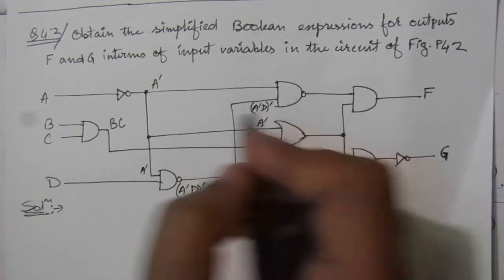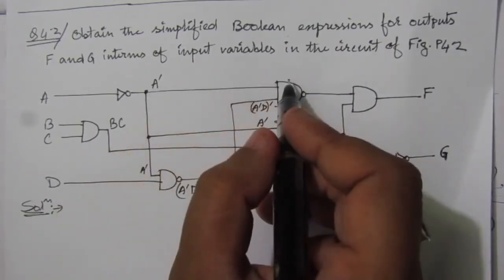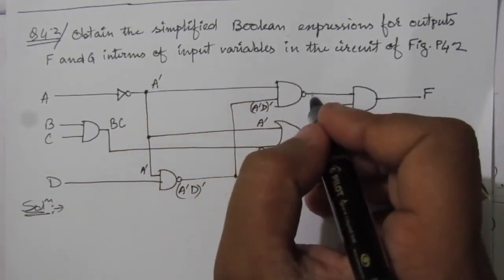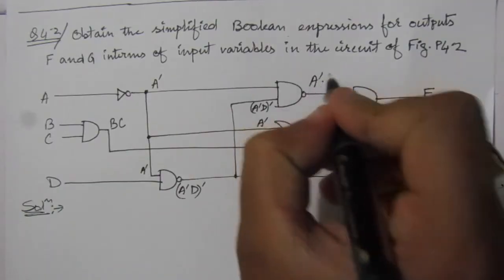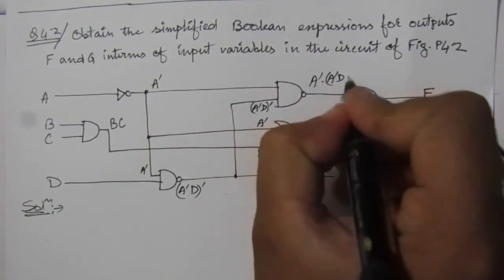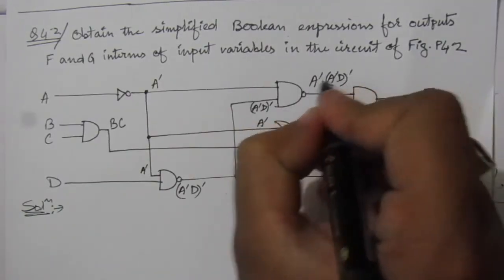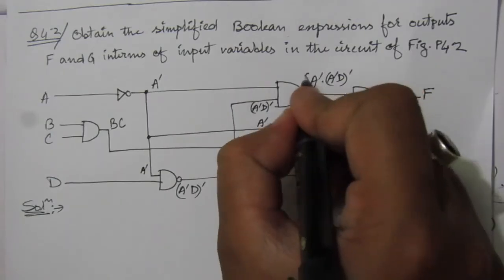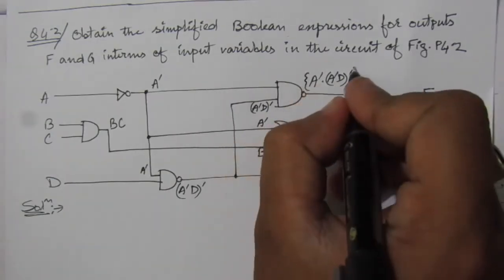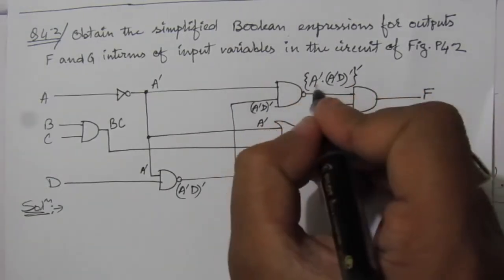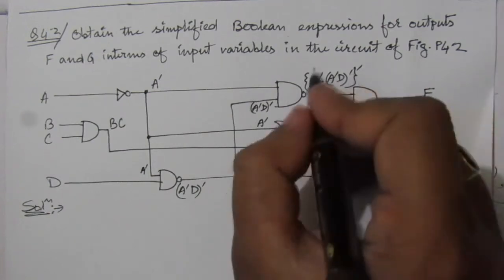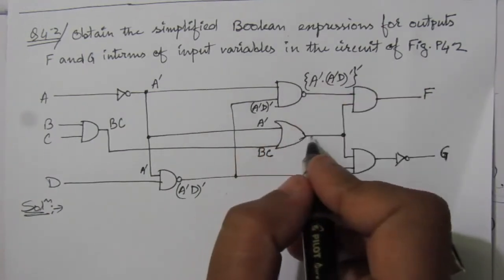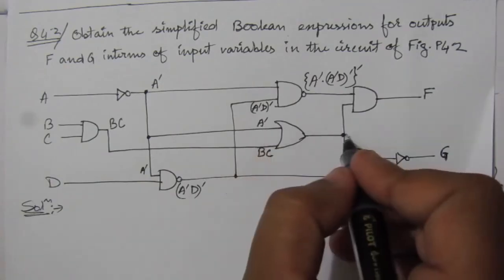After this NAND gate, the output is (A-bar · (A-bar · D)-bar)-bar. After the OR gate, we get A-bar + B·C. So at that node we have A-bar + B·C, and on the other line we have (A-bar · D)-bar.